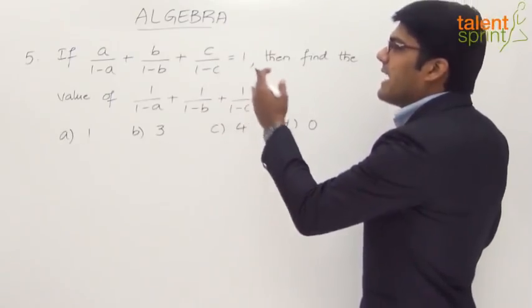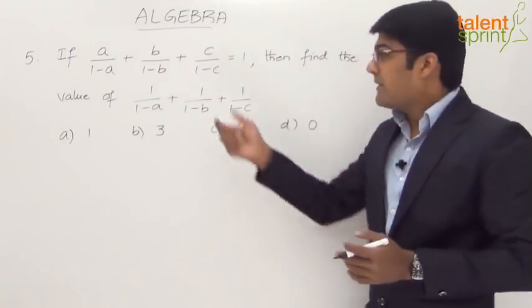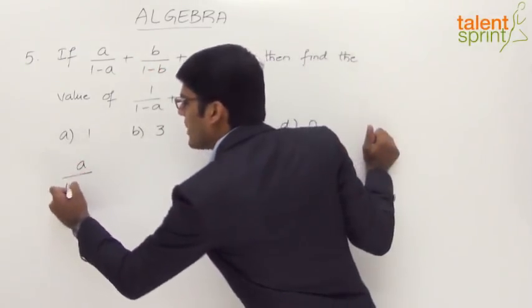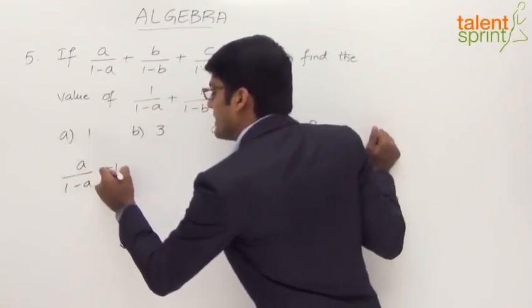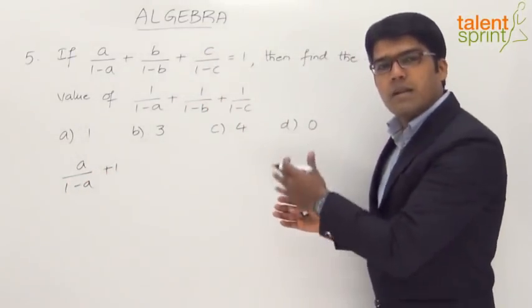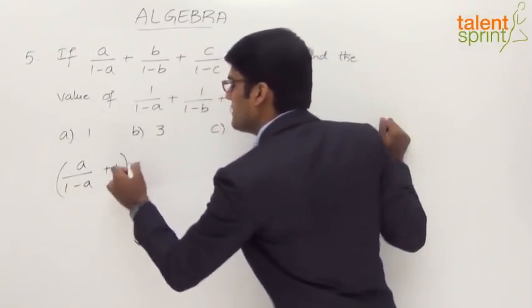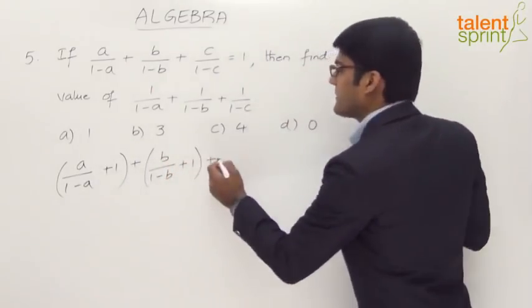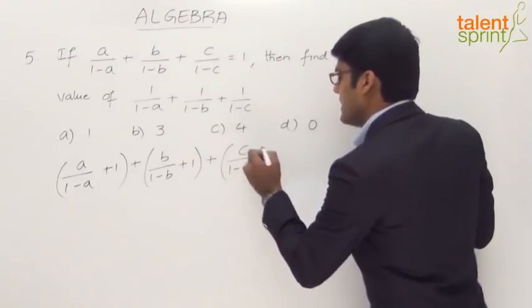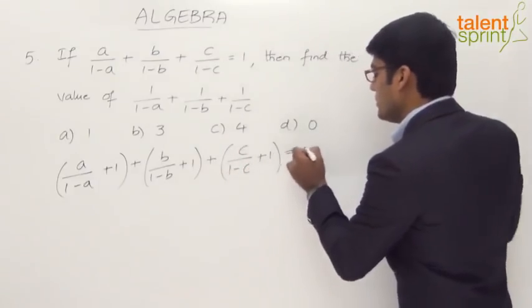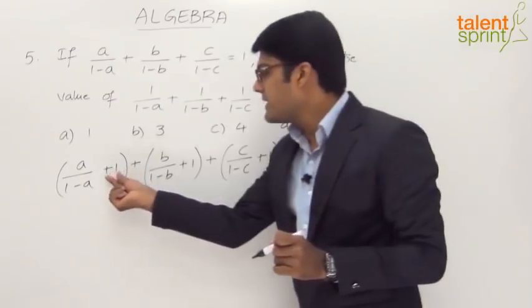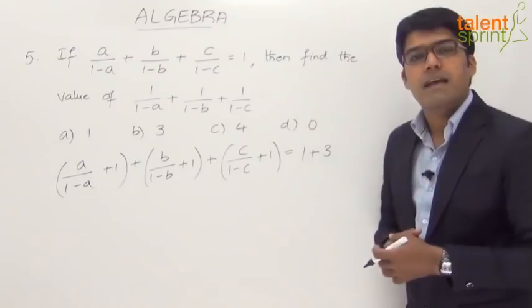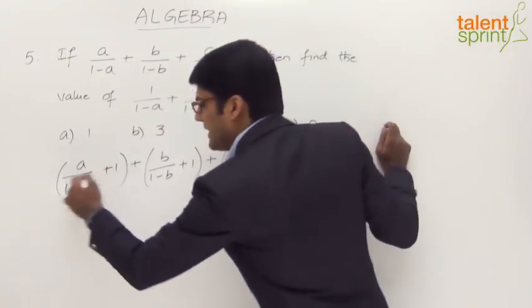The key idea is to add 3 to both sides of the equation. We split 3 as 1+1+1 and add one to each term: a/(1−a) + 1, plus b/(1−b) + 1, plus c/(1−c) + 1, equals 1+3. We have added 3 to the left side (one for each term) and the same 3 to the right side so that the equation remains balanced.